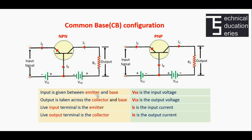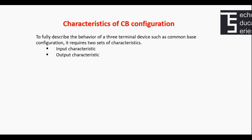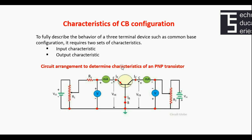To summarize CB configuration: input is given between emitter and base; output is taken across collector and base; the live input terminal is emitter; the live output terminal is collector; VEB is the input voltage; VCB is the output voltage; IE is the input current; and IC is the output current. To fully describe the behavior of a three-terminal device such as the common base configuration, two sets of characteristics are required: input characteristics and output characteristics.